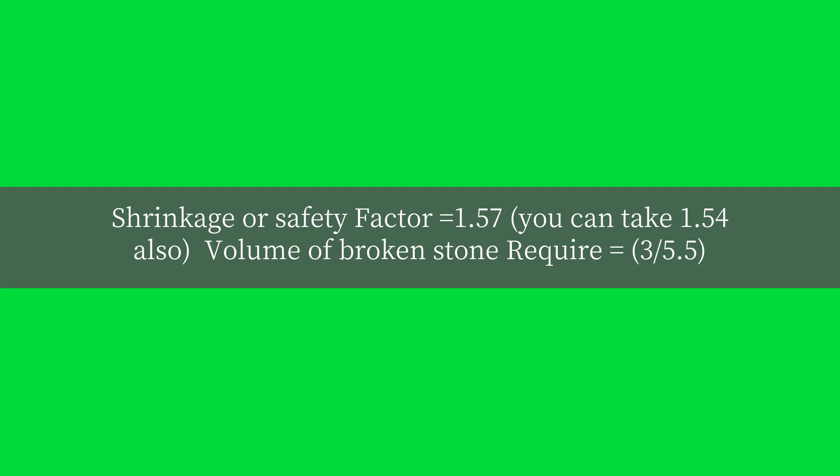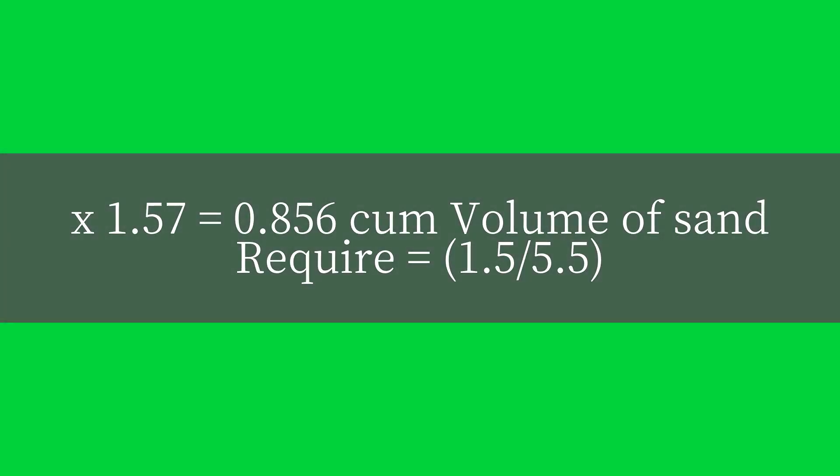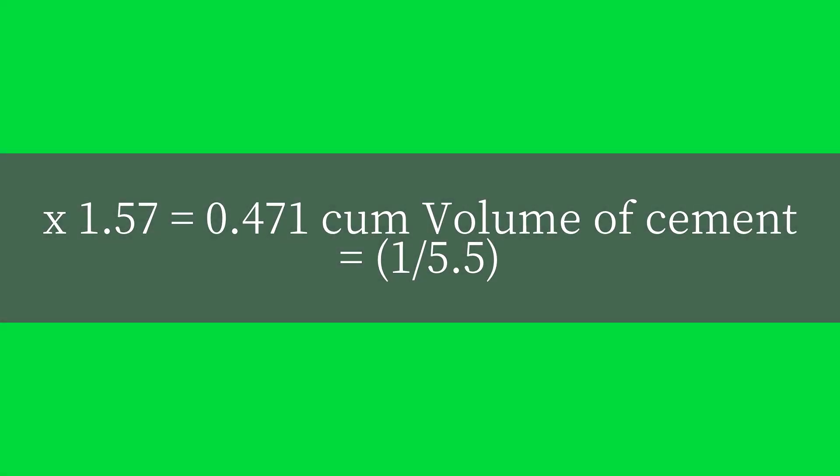Volume of broken stone required equals (3 / 5.5) × 1.57 = 0.856 cubic meters. Volume of sand required equals (1.5 / 5.5) × 1.57 = 0.471 cubic meters.